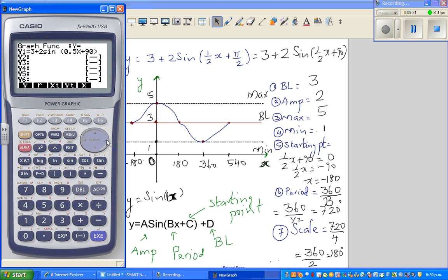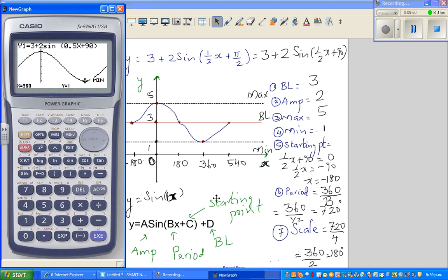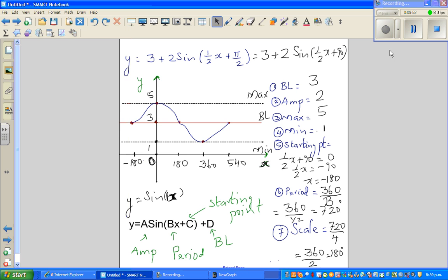Let me also show you on a graphic calculator. I have to scroll like this on my calculator, and then draw it. You can check like this. Maximum is at 0, 5. Minimum is 360, 1. Hopefully this video has been helpful. See you in the next video.